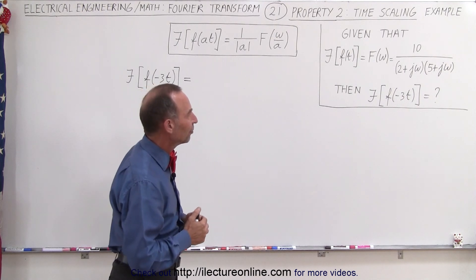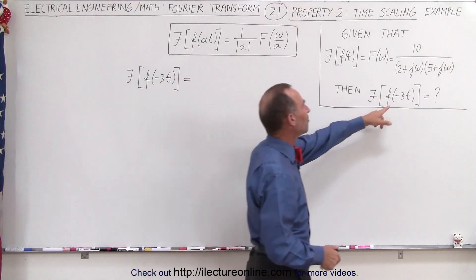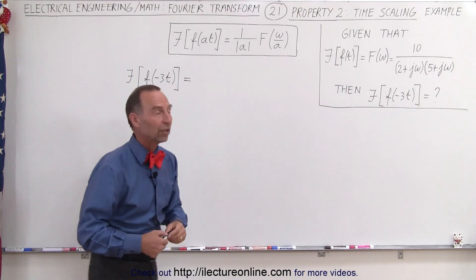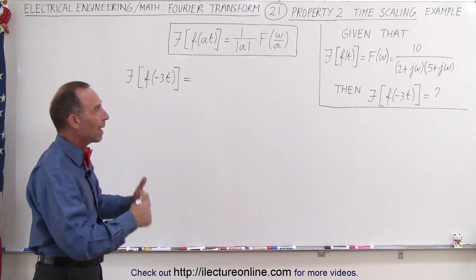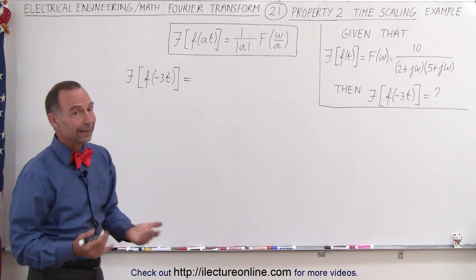Now what if the input now becomes f of minus 3t? How will that change the outcome? How will that change the Fourier transform? Do we have to go back and recalculate all that? The answer is no.